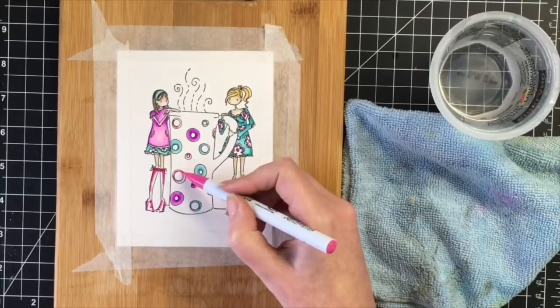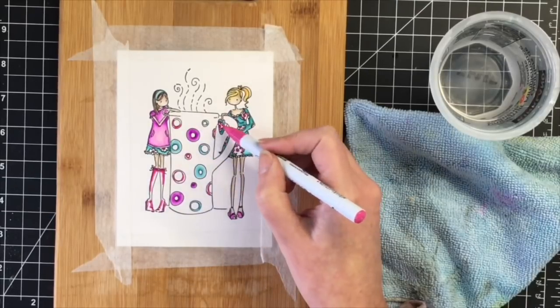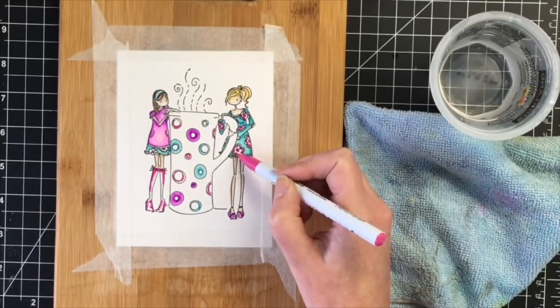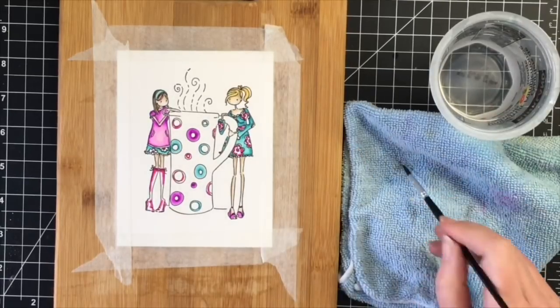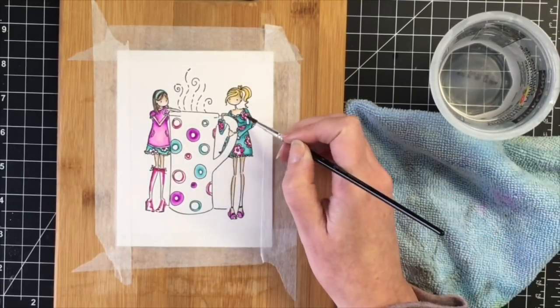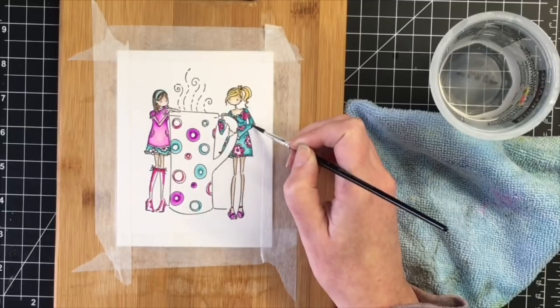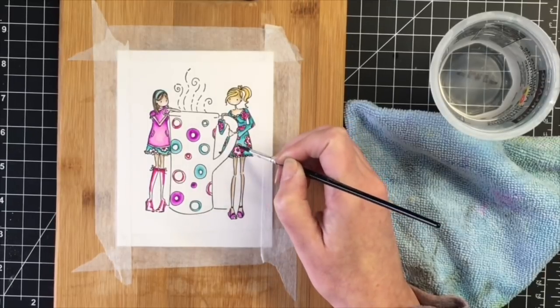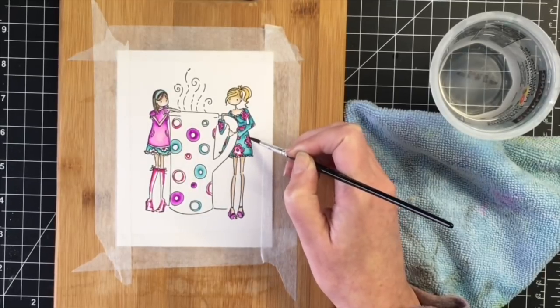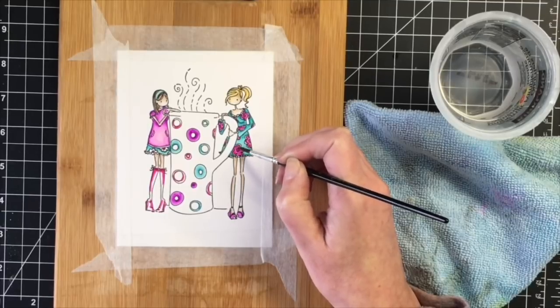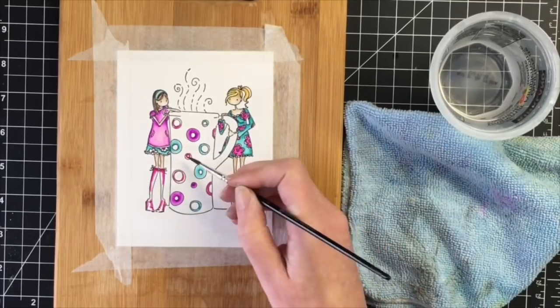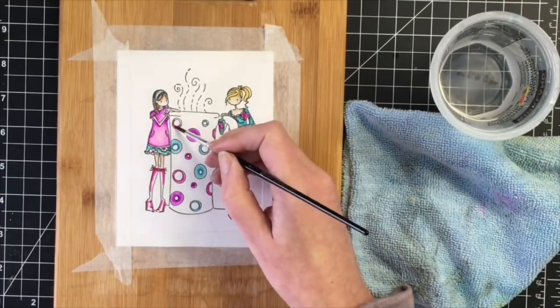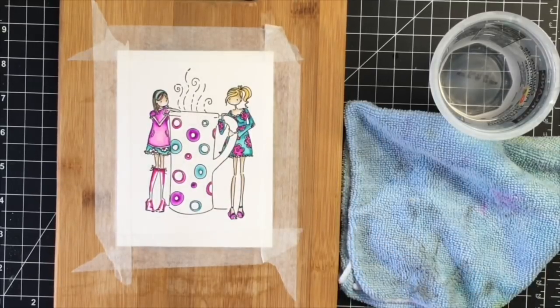So for the watercoloring, I am laying down the color first. And then as you can see, I'm bringing in the paintbrush afterwards with water to really soften that up and blend it out. The paintbrushes that I'm using are Ranger paintbrushes. They are super affordable, and I absolutely love them.